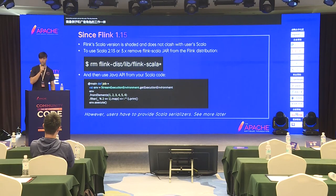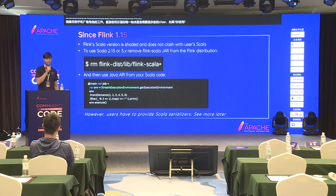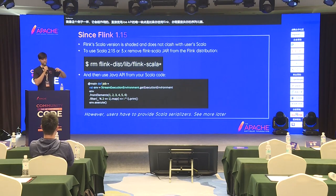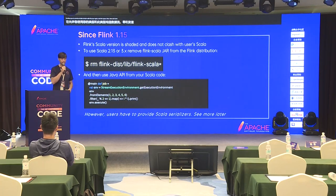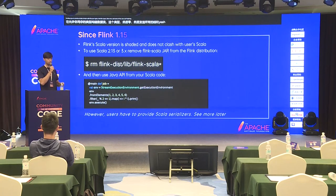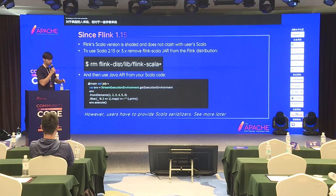The only downside of using the Java API directly is that you need to provide your own serializers. If you've used Flink, you know it allows you to construct a DataStream with your types, and this type is serialized and sent over the wire. Flink doesn't really know how to serialize your type — it can do that for primitive types, but for some Scala types you need to specify serializers, which is just some additional code.